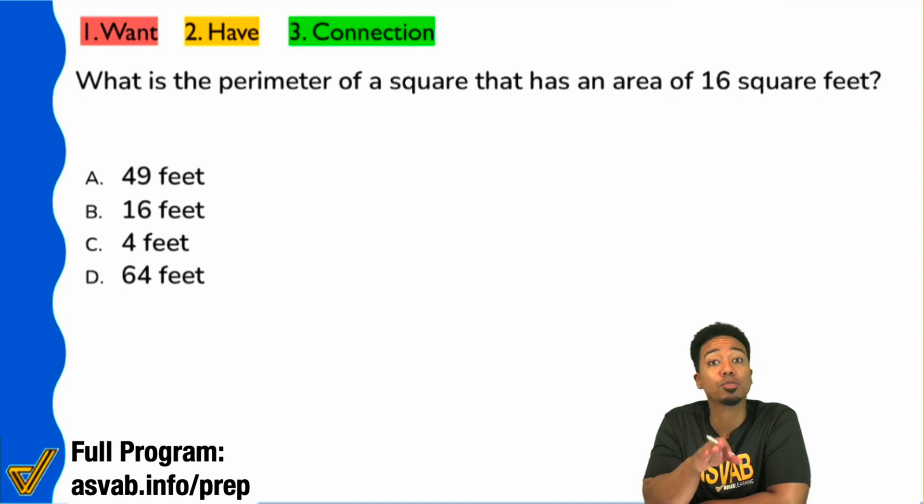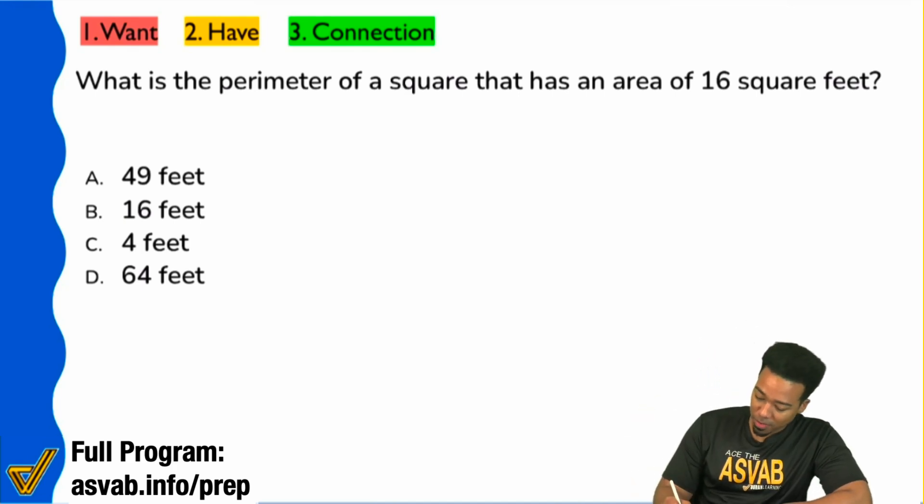This is actually really straightforward in terms of what they want you to find. How we find it might be a little weird. But right over here, it says, what is the perimeter of the square?